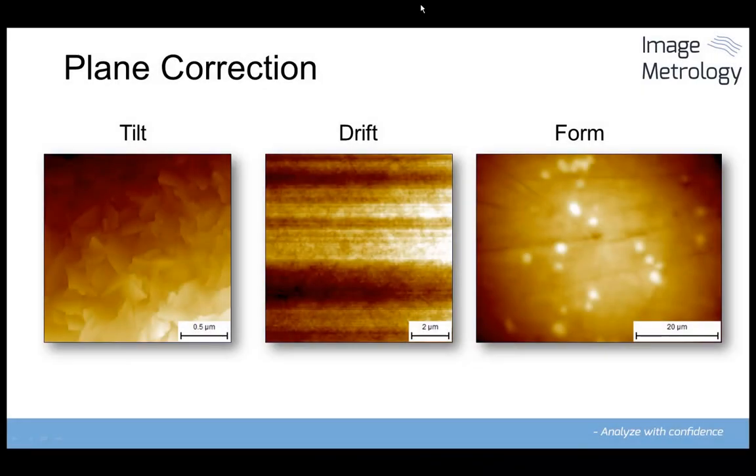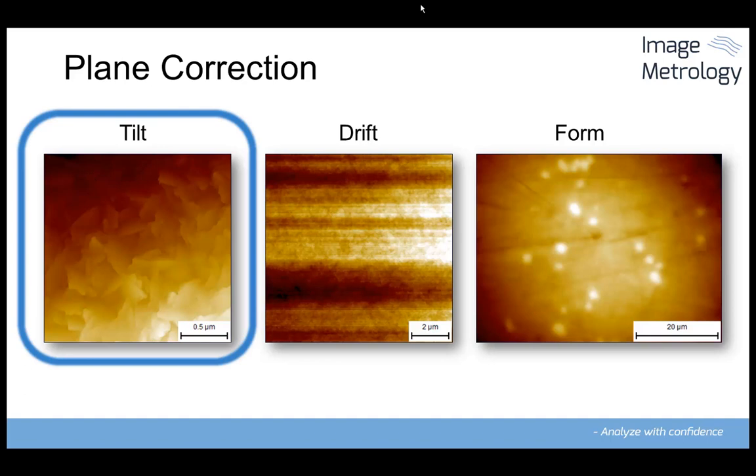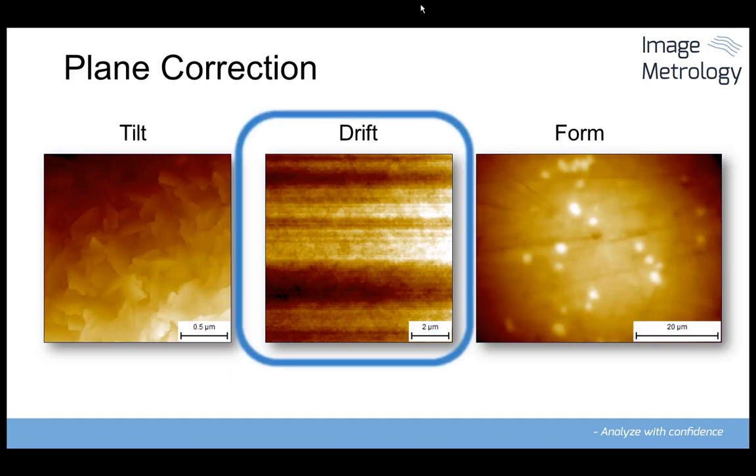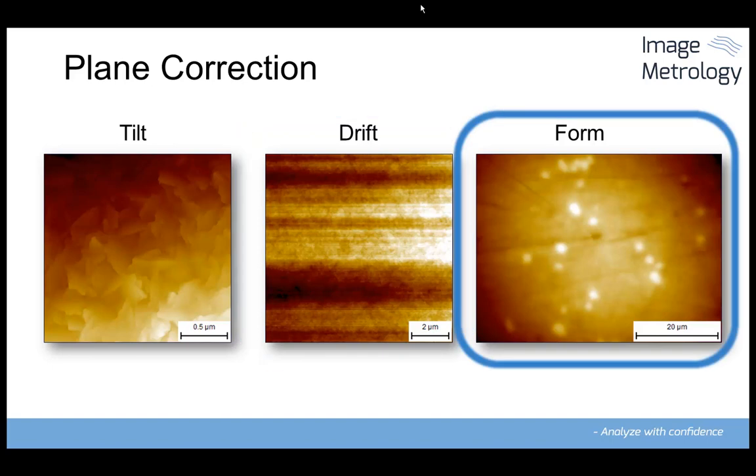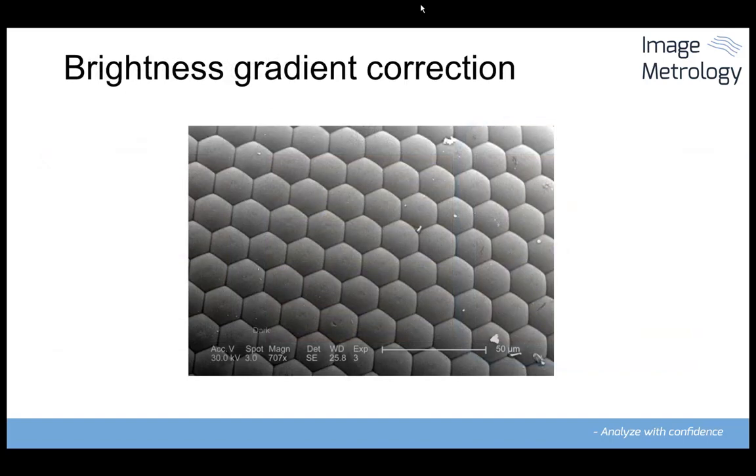All SPM images and images from 3D profilers require a minimum of plane correction or flattening in order to compensate for tilt or vertical drift. In addition, higher order plane correction is frequently used for removing surface form or to compensate for non-planar scanner movement. Even SEM images often require compensation of a brightness gradient across the image, which in SPIP translates into plane correction.